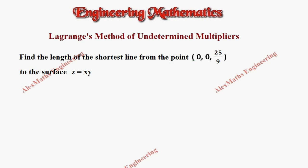Hi students, this is Alex here. In this video, we are going to use Lagrange's method of undetermined multipliers to find the length of the shortest line from the given point (0, 0, 25/9) to the surface z = xy.